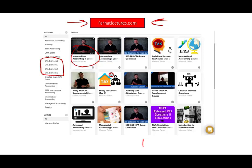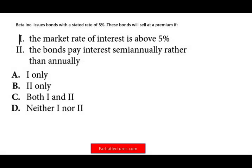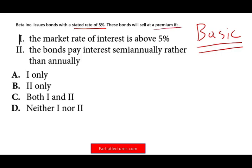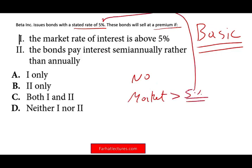Beta Inc issues a bond with a stated rate of 5%. The bond will sell at a premium if — so they're asking when will the bond sell at a premium. This is a basic understanding of bonds. The bond will sell at a premium if the market interest rate is above 5%? No — if the market rate is greater than 5%, which is greater than your offering, your bond will sell at a discount. So those answer choices are out.